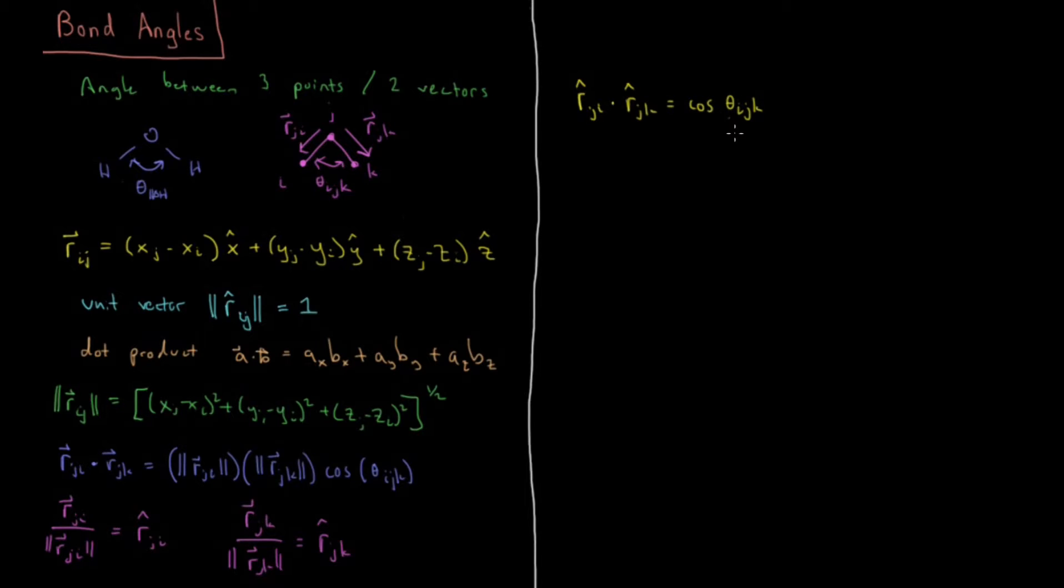So now all we have to do is take the arc cosine, take the inverse of our cosine, and we'll have our final result that theta I,J,K is equal to the arc cosine, or cosine minus 1 of R hat J,I dot R hat J,K.